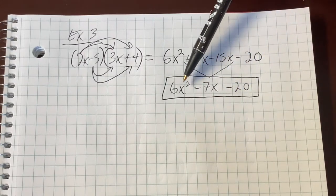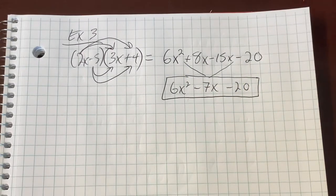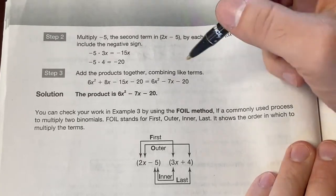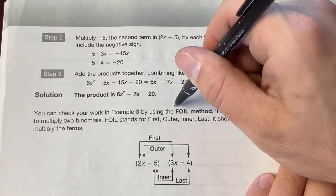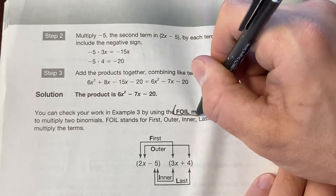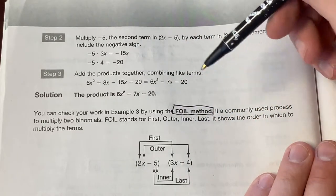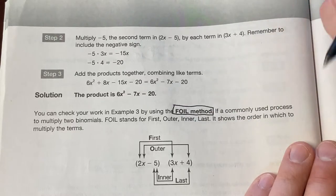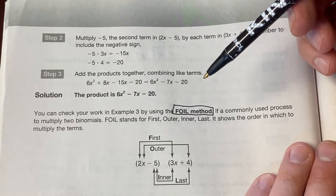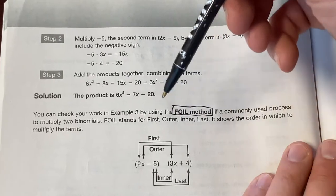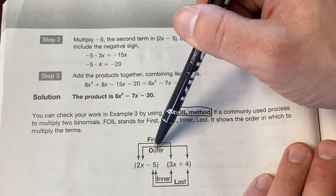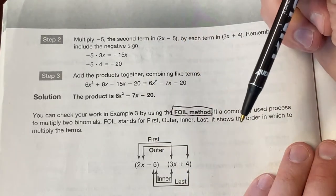Our final answer here would be 6x squared minus 7x minus 20. There is a very famous acronym for what we just did. And it is called FOIL. What we just did is oftentimes referred to as FOILing. Now what does this acronym stand for? It stands for exactly what we just did. First, outer, inner, last. What are you talking about? That's what we just did.